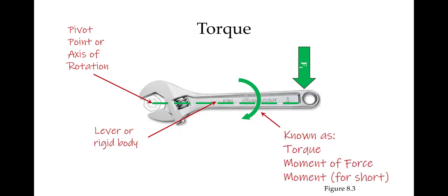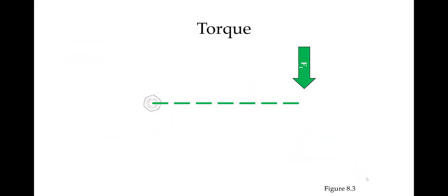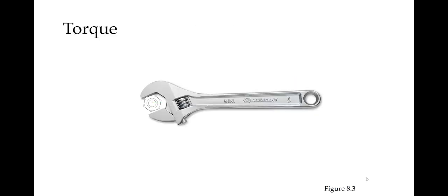I'll be referring to it as torque for the most part during this lesson. It's important that you can figure out the direction of the torque created by a force. Start with the axis of rotation. Slide your right hand from the axis of rotation to the point of force application. Curl your fingers in the direction of that force. As you can see in this case, the direction of the force is clockwise. A force applied in the opposite direction will create a torque in the opposite direction—in this case, the torque is counterclockwise.